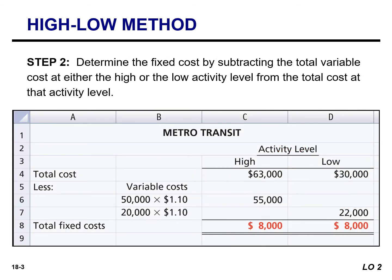Step two: we're going to determine our fixed cost by subtracting the total variable cost at either the high or the low level of activity from the total cost. The total cost at the high level of activity was $63,000. At that level we had 50,000 miles, so you simply multiply that by $1.10 — the variable cost per unit — to arrive at our total variable cost of $55,000. If you subtract the variable cost of $55,000 from $63,000, you'll obtain the fixed cost, in this case $8,000.